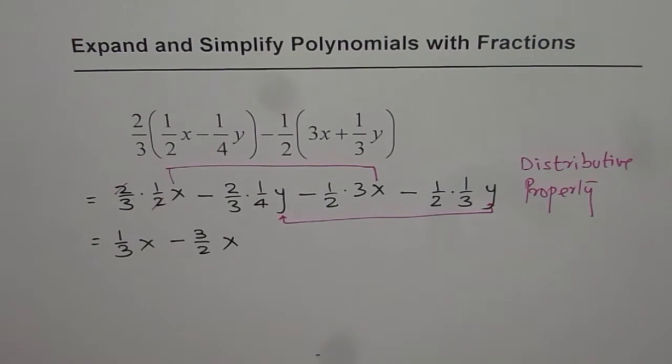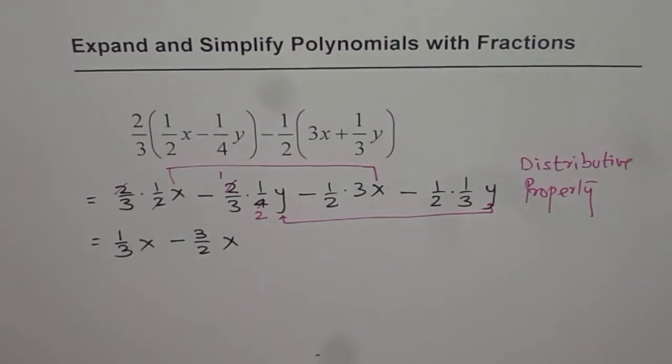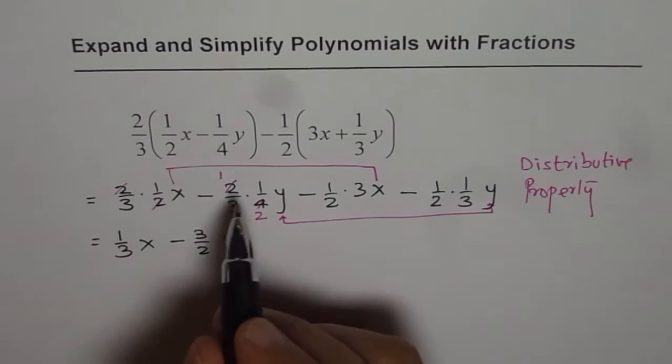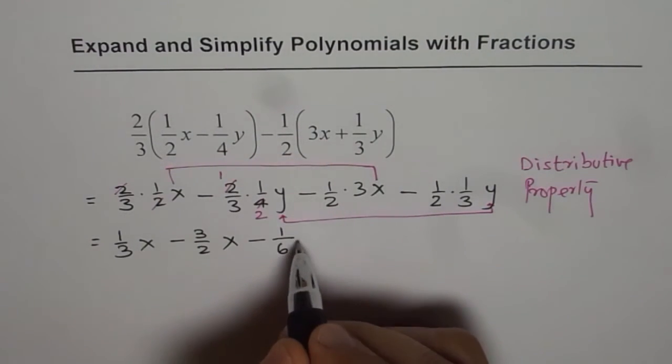For the y term we can actually simplify dividing them by 2, we get 1 and here we get 2. So we multiply and get 1 in the numerator, 6 in the denominator for y.